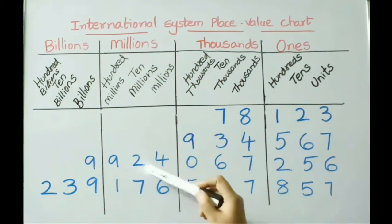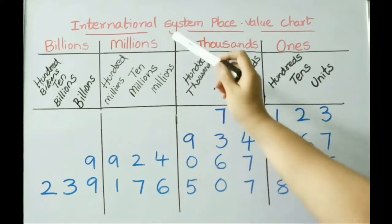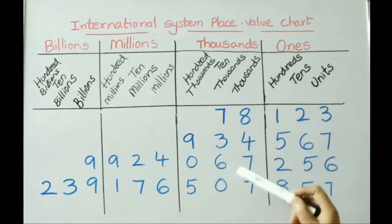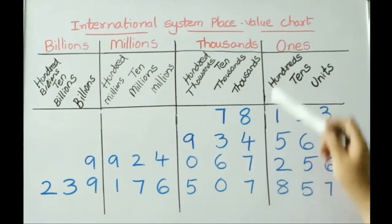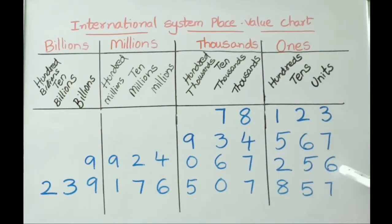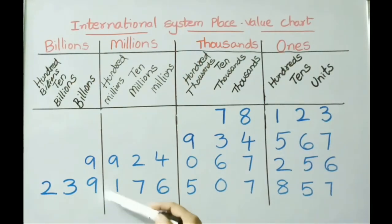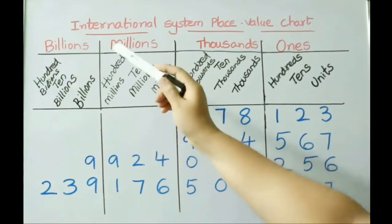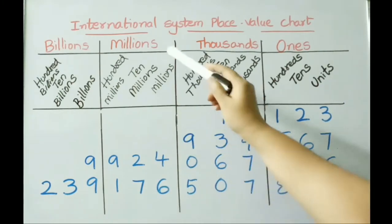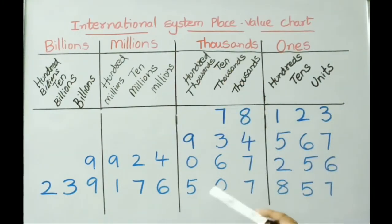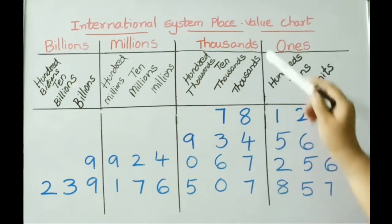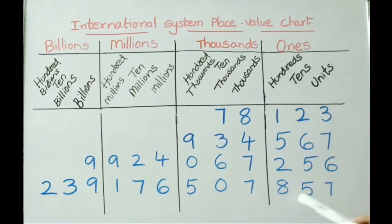See the next number: nine billion, nine hundred twenty-four million, sixty-seven thousand, two hundred fifty-six. See the next number: two hundred thirty-nine billion, one hundred seventy-six million, five hundred seven thousand, eight hundred fifty-seven.